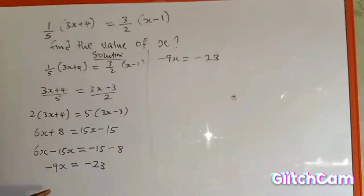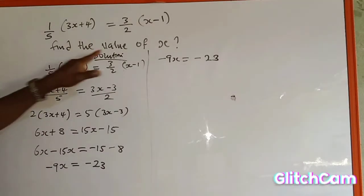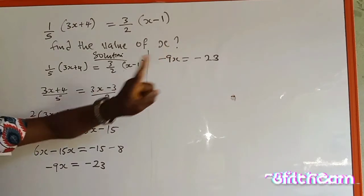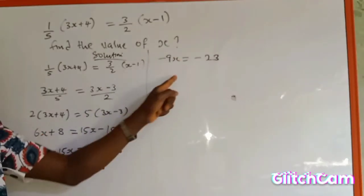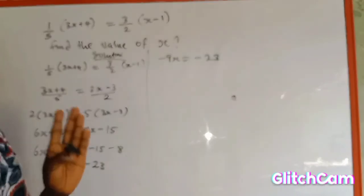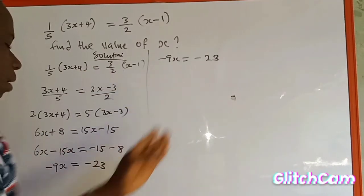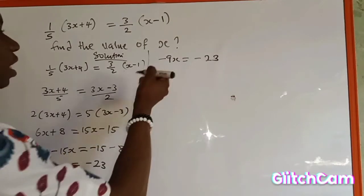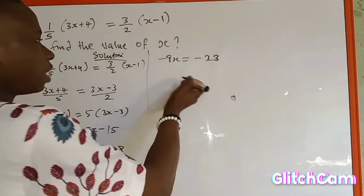So what we are going to do to get the value of s, remember the equation says we should find the value of s. And minus 9s is not s because a number is attached to s. This number attached to s is a coefficient of s. We are going to divide both sides by the coefficient. We are going to divide both sides by the coefficient of s, and the coefficient of s, of course, is minus 9.